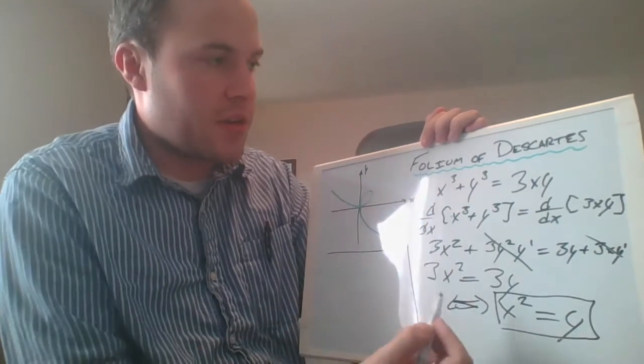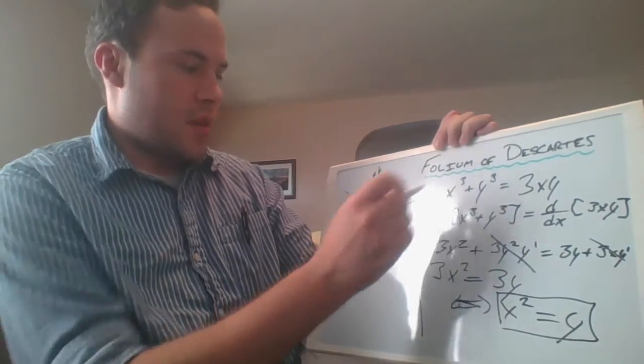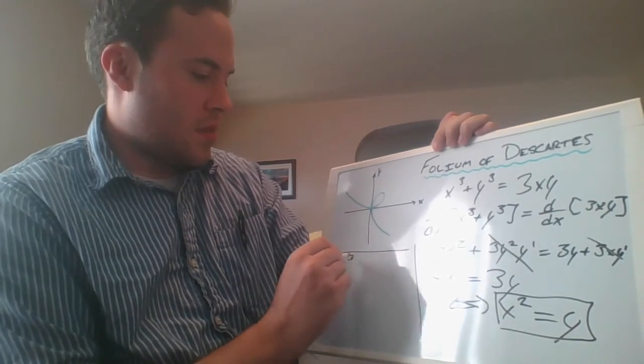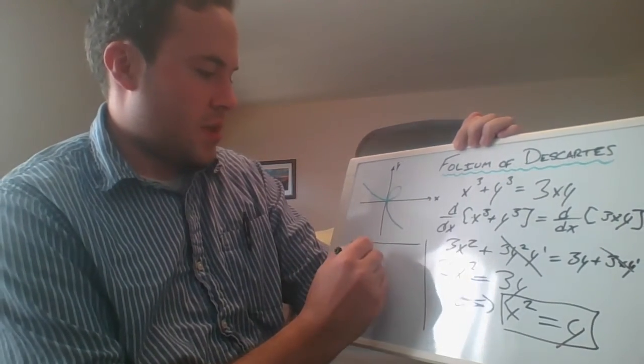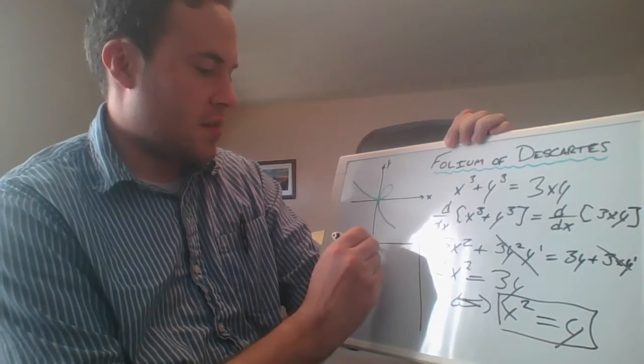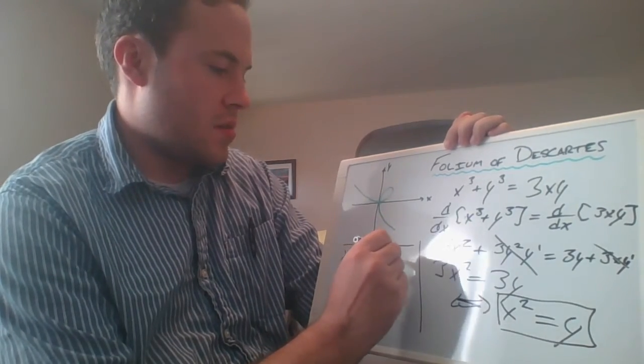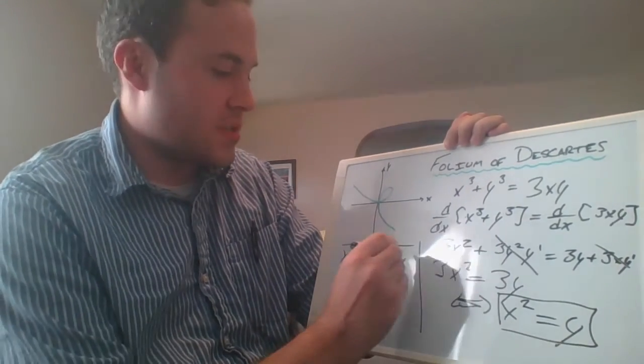We know that y must be equal to x squared at the point where this has a horizontal tangent line. So everywhere in the folium of Descartes formula, the equation up here that dictates this curve, we're going to replace y with x squared. That's going to give us x cubed plus y cubed, but y is x squared so that's going to be x to the sixth. That's going to be equal to 3x times x squared, which is x cubed.